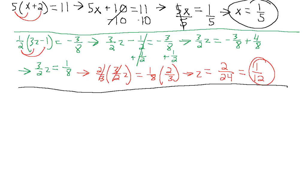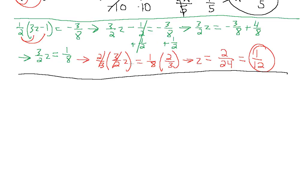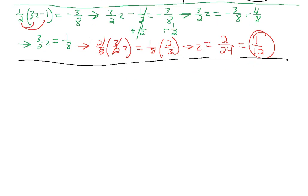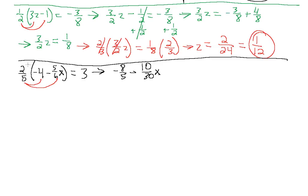Let's do a couple more. A multi-step equation is simply the equations we've been solving — just with a couple of steps instead of one. Let's say we have 2 over 5 multiplied by the expression (minus 4 minus 5 over 6x), and this equals 3. Once again, we see our variable buried inside the parentheses, so we're going to distribute this 2 over 5 into the expression. This gives us 2 fifths times minus 4, which is minus 8 over 5, minus 2 fifths times 5 over 6x, which is 10 over 30x — multiplying numerator times numerator, denominator times denominator — and we still have our 3 on the other side.